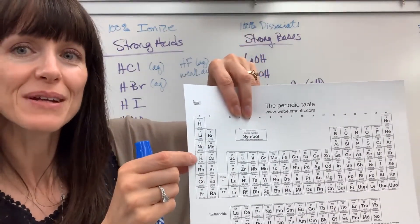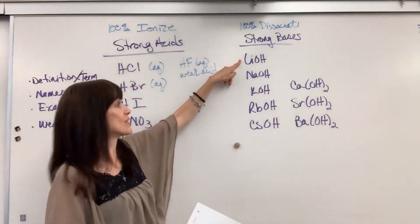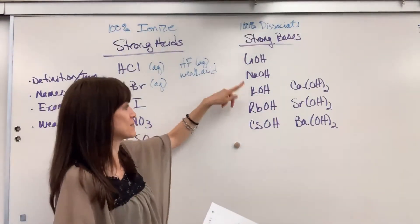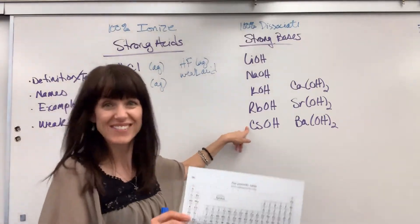So here's your alkaline metals right there. Check it out. Lithium, sodium, potassium, rubidium, cesium, lithium hydroxide, sodium hydroxide, potassium hydroxide, rubidium hydroxide, cesium hydroxide.